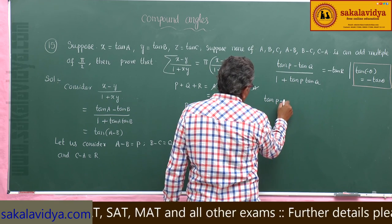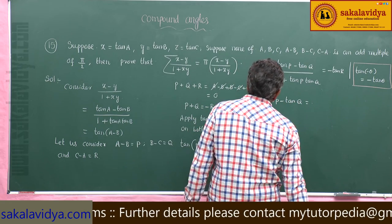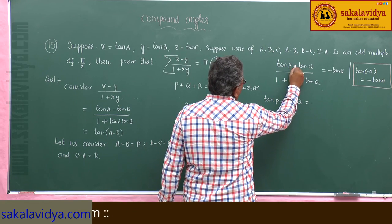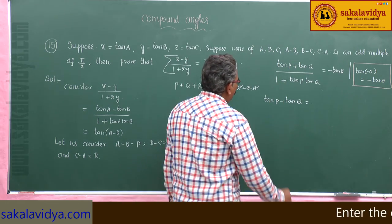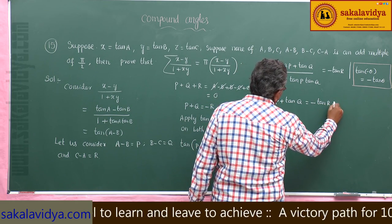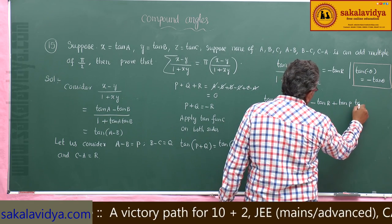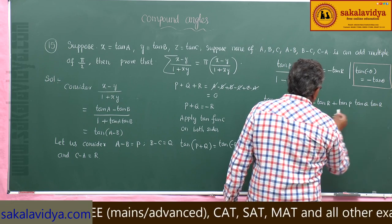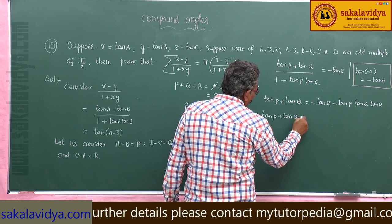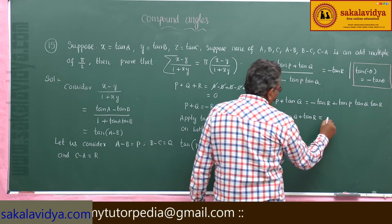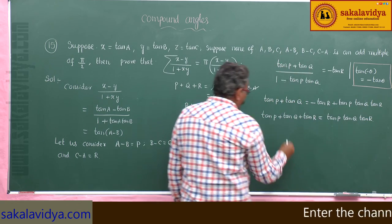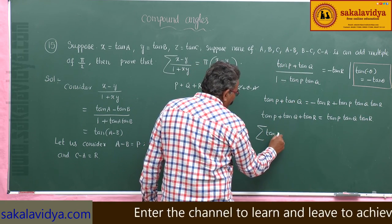So by cross multiplication, tan p plus tan q equals minus tan r times (1 minus tan p times tan q). Rearranging using the formula tan p plus tan q by 1 minus tan p tan q equals tan r. We get tan p plus tan q plus tan r equal to tan p times tan q times tan r. This is nothing but sigma tan p equals pi of tan p.